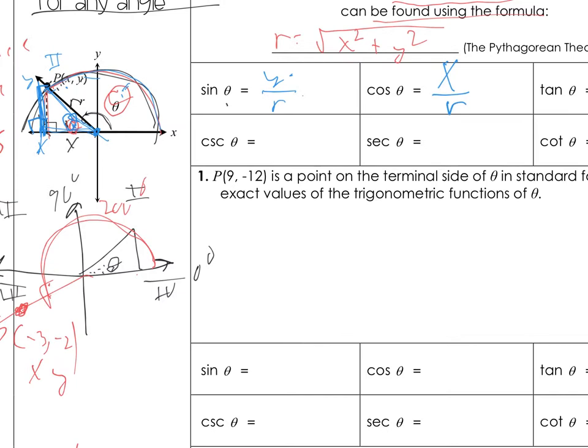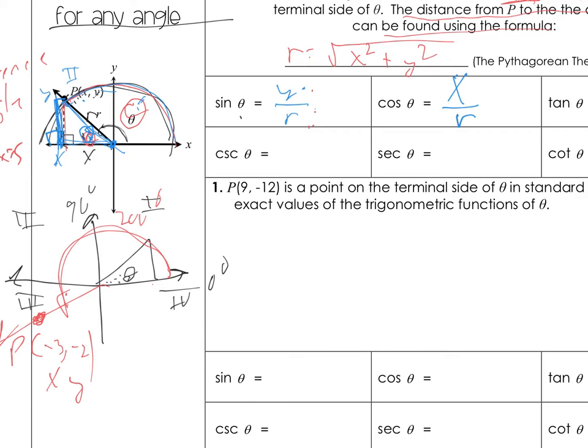Cosecant is just the reciprocal of Y over R, so it's R over Y. Secant would be R over X. And cotangent is X over Y.